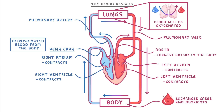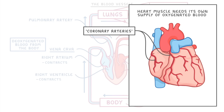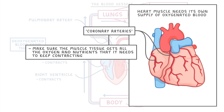One last thing: the heart muscle itself also needs its own supply of oxygenated blood, and it gets this from smaller arteries that branch off the aorta called coronary arteries. These vessels encircle the heart and make sure the muscle tissue gets all the oxygen and nutrients it needs to keep contracting. If these coronary arteries get blocked, though, it could lead to coronary artery disease or a heart attack.